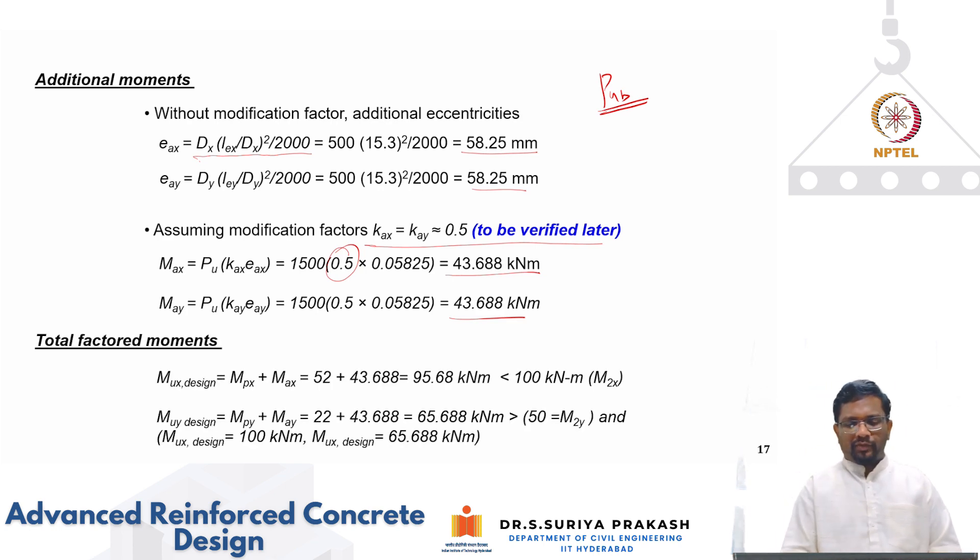So total factored moments will be primary bending moment plus additional bending moment. When you add them up you get about 95.68 about x axis and about y axis you get 65.68. So for both of them then we take Mu_x design. So again this cannot be less than m2. So that is the reason we are taking Mu design about x axis minimum of m2 which is 100 and about y axis it is 65.66.